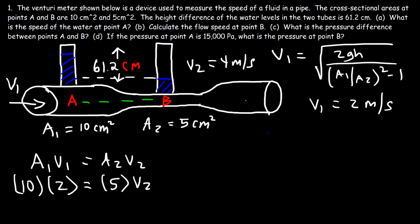Once the pipe expands again at point C, the flow speed returns to the same speed as at point A — back to 2 meters per second. So the speed goes from 2 m/s at A, increases to 4 m/s at the narrow section B, then decreases back to 2 m/s.